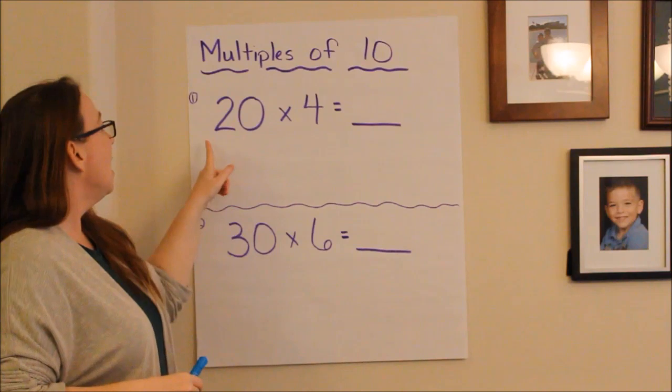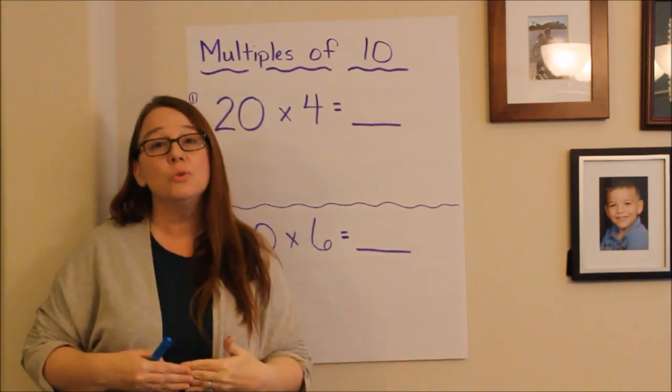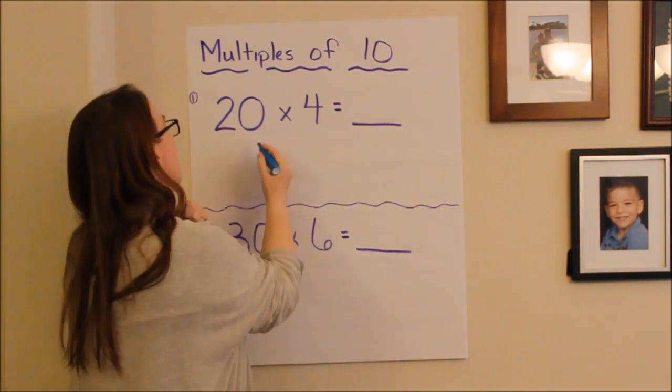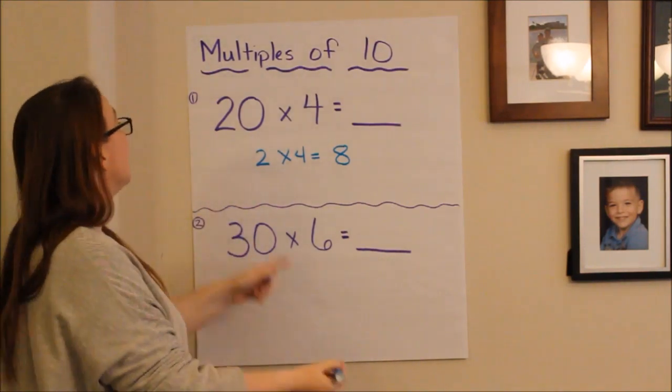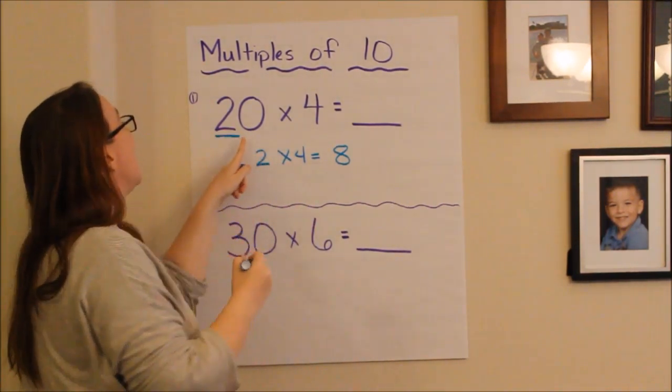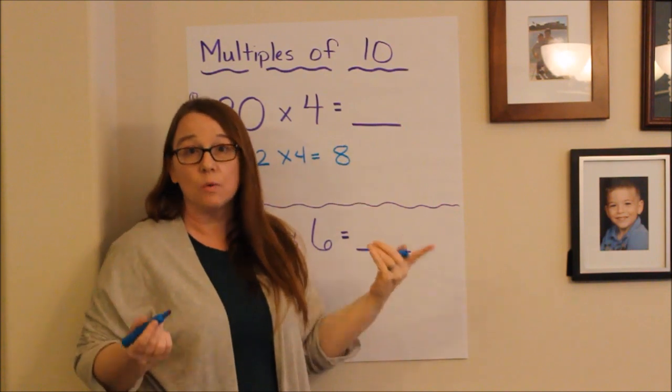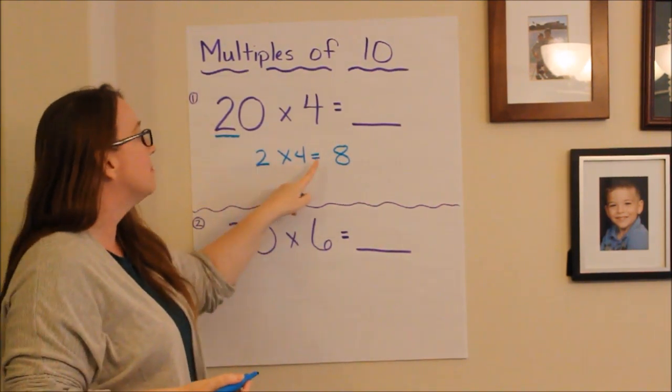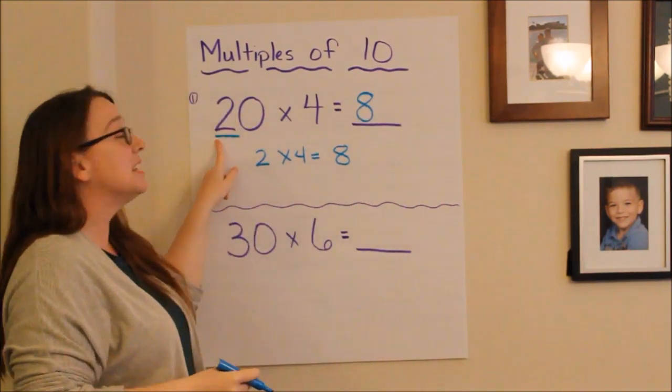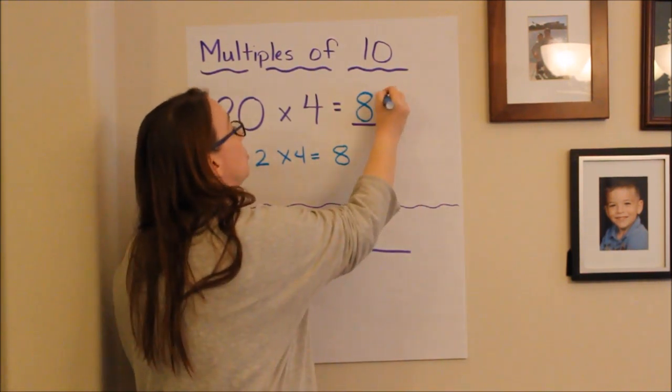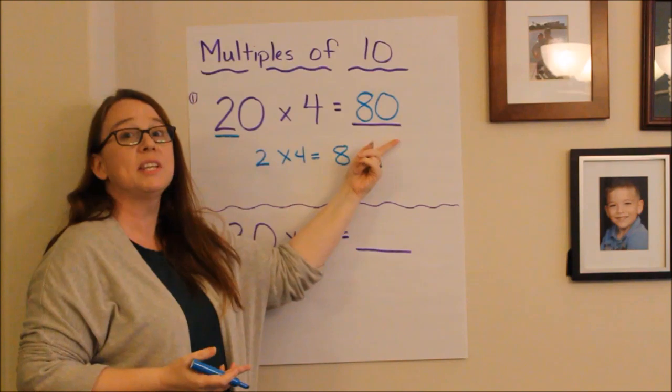So let's look at a problem like this. I want to know what is the product of 20 times 4. Well, to solve this problem, I can use the facts that I already know. I already know that 2 times 4 gives me 8. But since my 2 in this problem is actually in the tens place, that means that my answer also has to have a zero at the end of it. So, since I know that 2 times 4 equals 8, I'm going to go ahead and put that as the first part of my problem. And since my 2 is in the tens place, I'm going to put a zero in my answer. So, 20 times 4 equals 80.